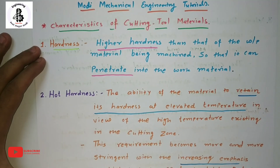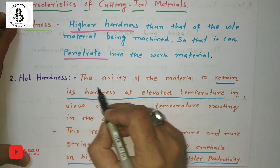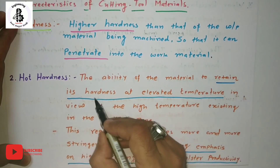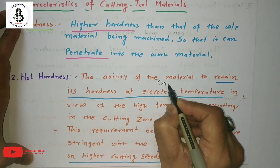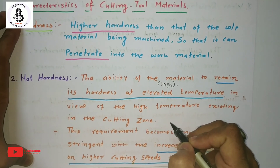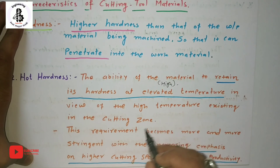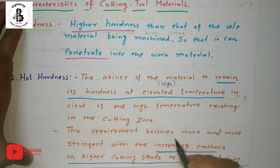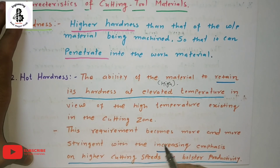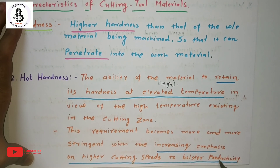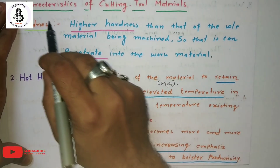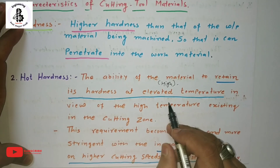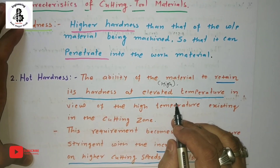The second characteristic is hot hardness — the ability of the material to retain its hardness at elevated or high temperatures. This requirement becomes more and more important with the increasing emphasis on higher cutting speeds to boost productivity. In simple terms, the required property is hardness maintained at elevated temperatures.